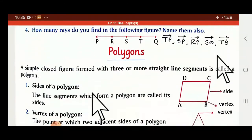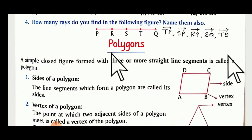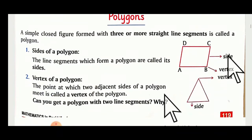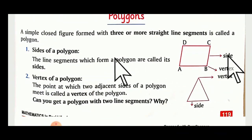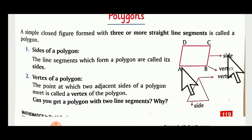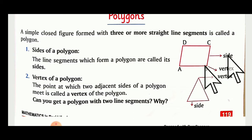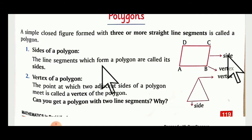After this we have polygons. What are polygons? A simple closed figure formed with 3 or more straight line segments is called a polygon. For a square we have 4 lines; for a triangle we use 3 lines — we call these polygons. The line segments which form the polygon are called its sides.